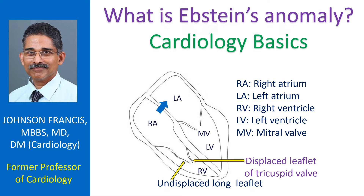Epstein's anomaly is a congenital anomaly of the tricuspid valve which may manifest soon after birth or more commonly later in life. In Epstein's anomaly, two of the three leaflets of the tricuspid valve are displaced further into the right ventricle. Usually the anterior leaflet is not displaced, while the septal and posterior tricuspid leaflets are displaced. A part of the right ventricle becomes part of the right atrium functionally and is called the atrialized right ventricle.